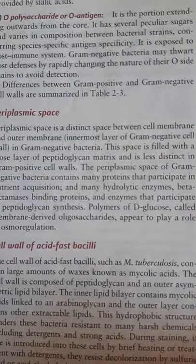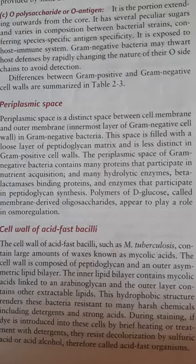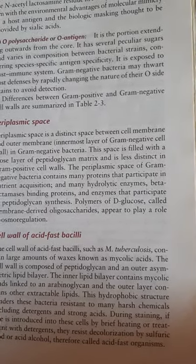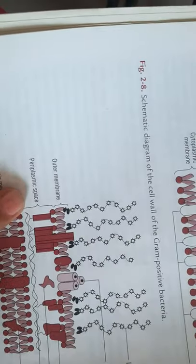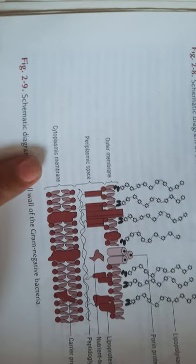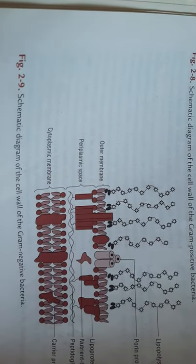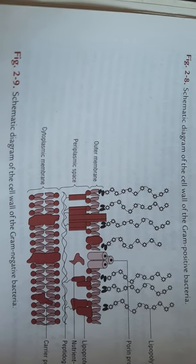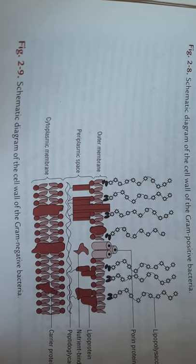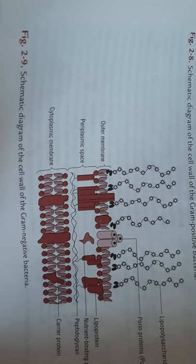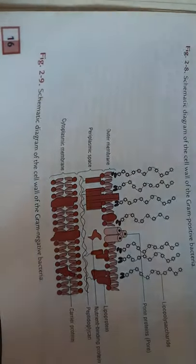Periplasmic space is a distinct space between the cell membrane and outer membrane. It is found in gram-negative bacteria. This space is filled with a loose layer of peptidoglycan matrix and is less distinct in gram-positive cell walls. In gram-negative bacteria, peptidoglycan layers are present in the periplasmic space.